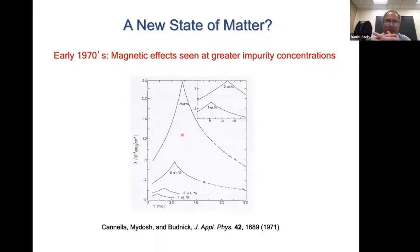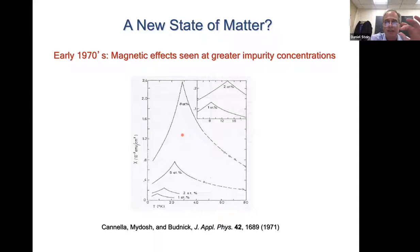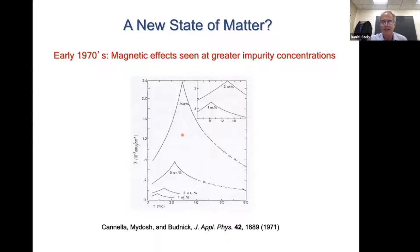For those who remember solid state physics, this kind of cusp is usually associated with an anti-ferromagnetic phase transition from a paramagnet to an anti-ferromagnet, where the spins alternate their orientations as one moves around the lattice. But neutron scattering experiments to look at the structure of the magnetic ordering showed that there was no ordering of any regular kind in space. It looked as if the iron magnetic moments were frozen into random orientations, which in fact was the case.